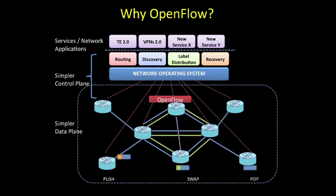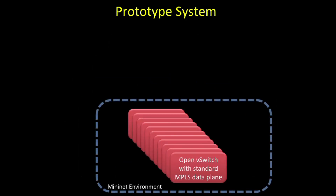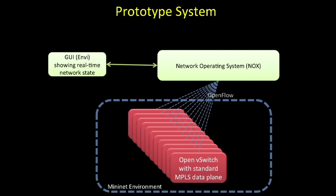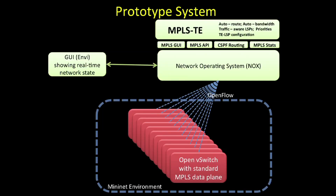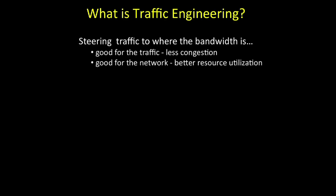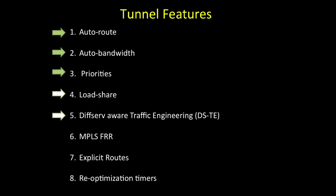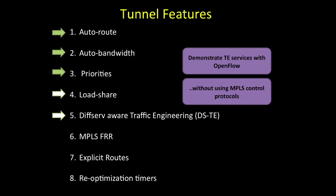And OpenFlow doesn't need to change either, for all it gives is control over the simple push, swap, pop data plane operations, which remain the same. To demonstrate that we can replicate what MPLS provides today, we built a system where we emulated a wide area network with multiple instances of Open vSwitch, an OpenFlow-enabled software switch, which we modified to include the standard MPLS data plane. We used OpenFlow as the only control plane protocol and then layered a traffic engineering service on top of our system.